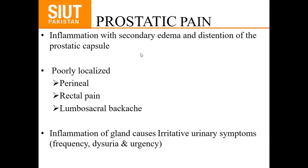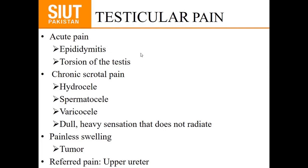Testicular pain. A patient may present with either acute or chronic pain. Acute pain suggests epididymitis or torsion of the testis. For chronic pain, there is hydrocele, spermatocele, or varicocele. Chronic pain is usually dull with a heavy sensation and does not radiate. Painless testicular swelling raises the suspicion of tumor. Sometimes testicular pain is due to upper ureteric obstruction.